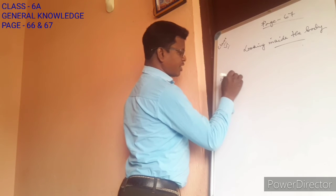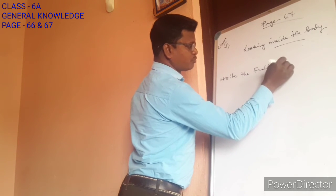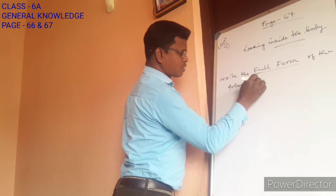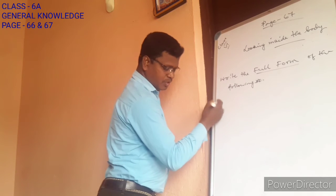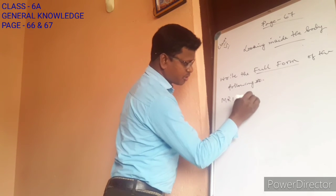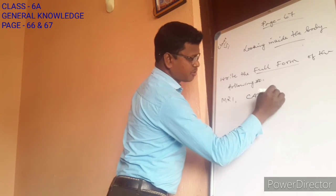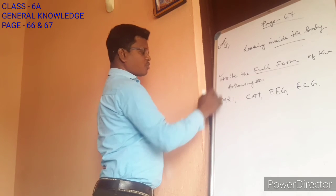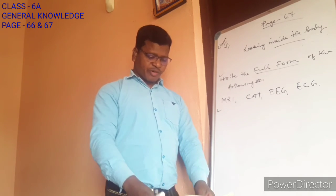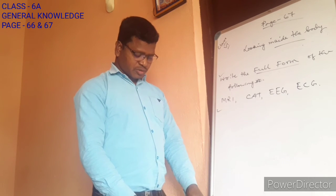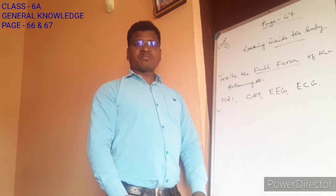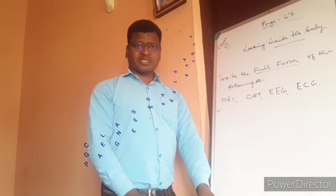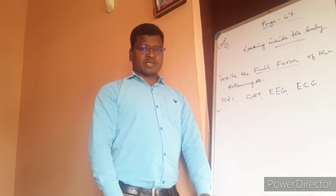Write the full forms of the following: MRI, CAT, EEG, and ECG. These are the things from page number 66 where we have quite many questions — please write them along with the answers given. Pages 66 and 67 you are supposed to write in your copy. If you have any doubts, you can clarify them during class.